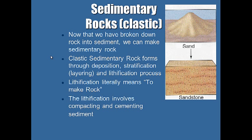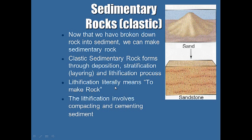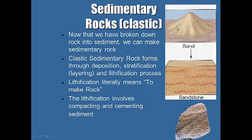Now for clastic sedimentary rocks. Once we have broken-down rock — sediment like sand — we can make what's called sandstone. Clastic sedimentary rock forms through deposition, stratification, and lithification. Lithification literally means to make rock — to lithify means to make rock. The lithification process involves compacting and cementing sediment.